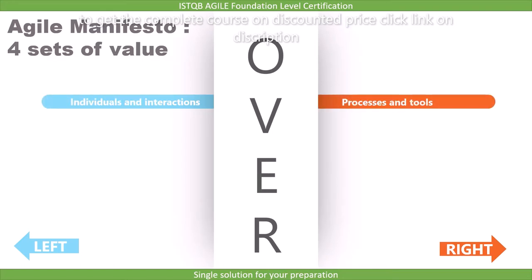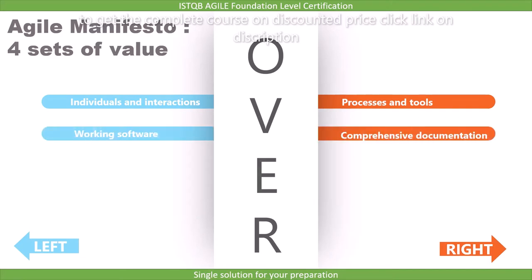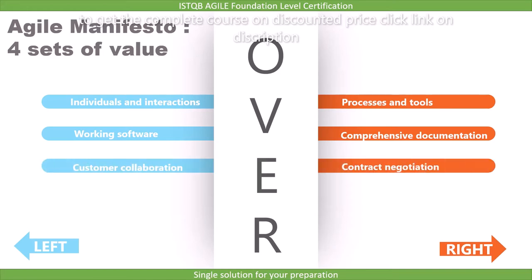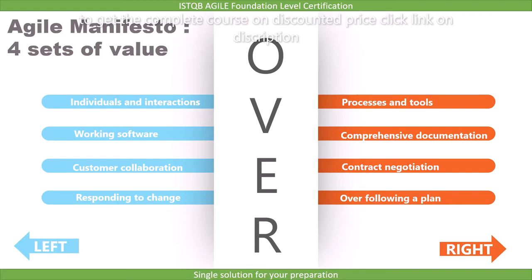The four statements of value in the Agile Manifesto are: first, Individuals and interactions over processes and tools; second, Working software over comprehensive documentation; third, Customer collaboration over contract negotiation; and fourth, Responding to change over following a plan. The manifesto argues that although the items on the right have value, those on the left have greater value. It does not suggest replacing right-side items, but stresses prioritizing left-side items.